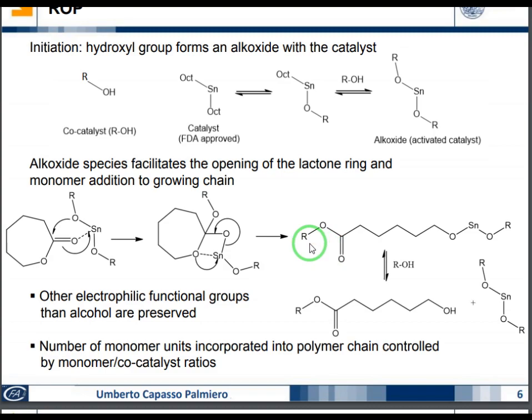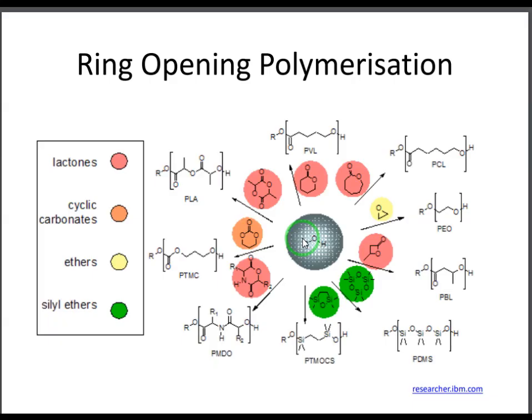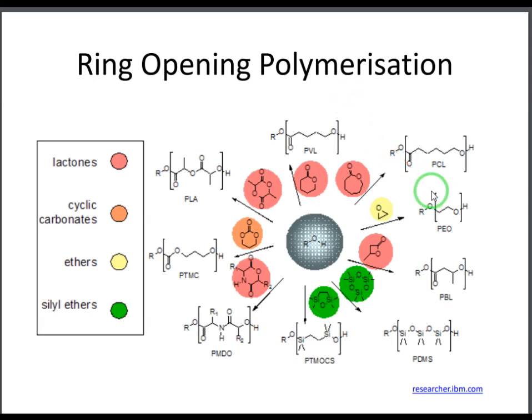Now let's get back to the slides to mention advantages and disadvantages. One advantage of ring opening polymerization is that it mostly deals with polyesters, which are biodegradable within our body. By using ROP to polymerize biodegradable monomers, we can tune the biodegradability of our polymeric chains.